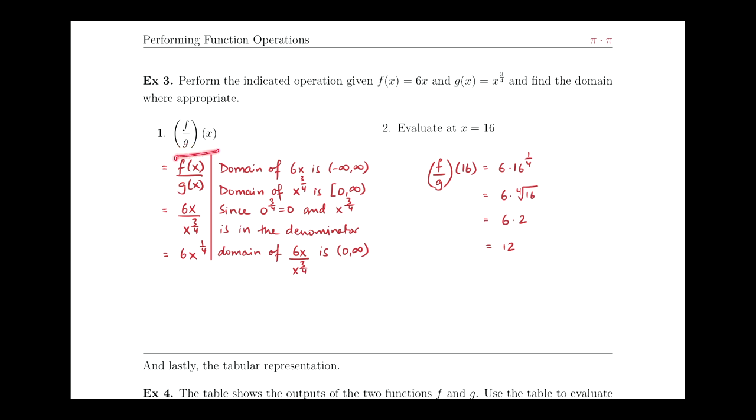So f over g of x, hopefully you remember, just means find f of x divided by g of x. So we're just dividing the two functions by each other.